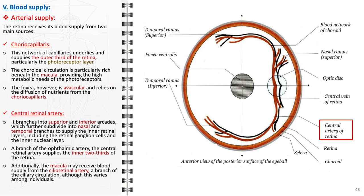2. The central retinal artery: originating from the ophthalmic artery, the central retinal artery is the main vessel that nourishes the inner two-thirds of the retina. It enters the eye alongside the optic nerve and branches out into superior and inferior arcades. These arcades further divide into nasal and temporal branches, ensuring a comprehensive supply to the inner layers of the retina, which include the retinal ganglion cells and the inner nuclear layer.